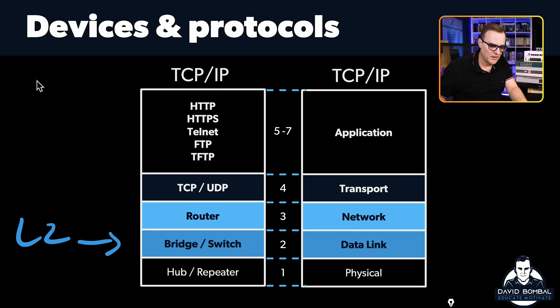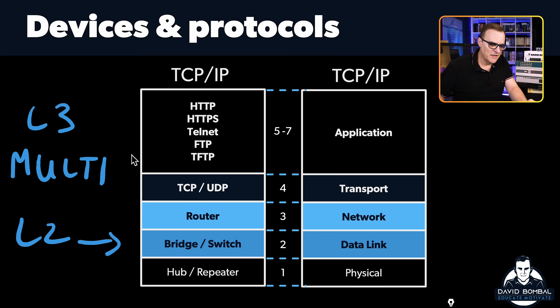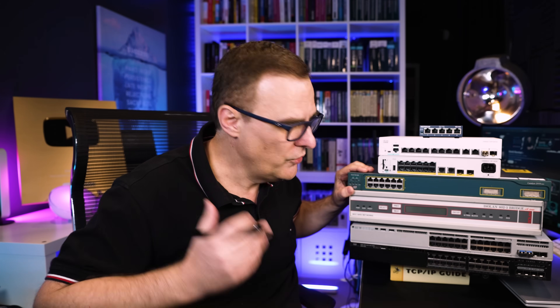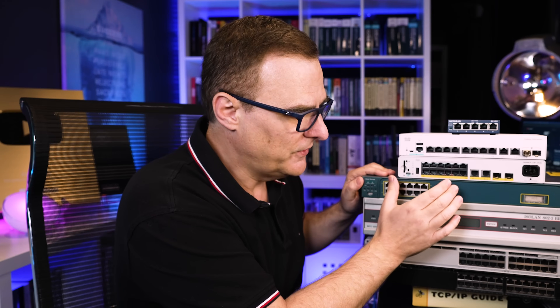The lines get blurred now because we have what are called layer two switches or layer three switches, also known as multi-layer switches. The idea of a layer three switch is it has routing capabilities — it's basically a combined switch and router. A pure layer two switch, such as the 2950, can't route. It only uses an IP address for management purposes so you can SSH to it, but it doesn't route from one VLAN to another using IP addresses. It only understands MAC addresses.